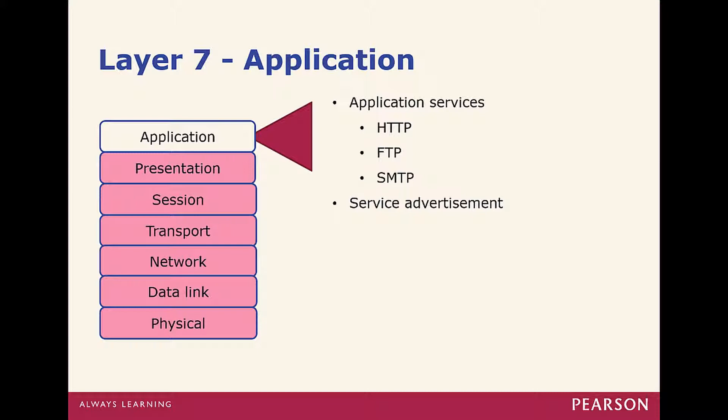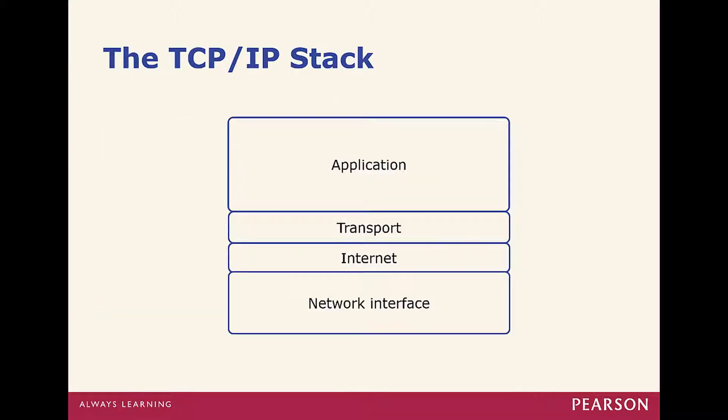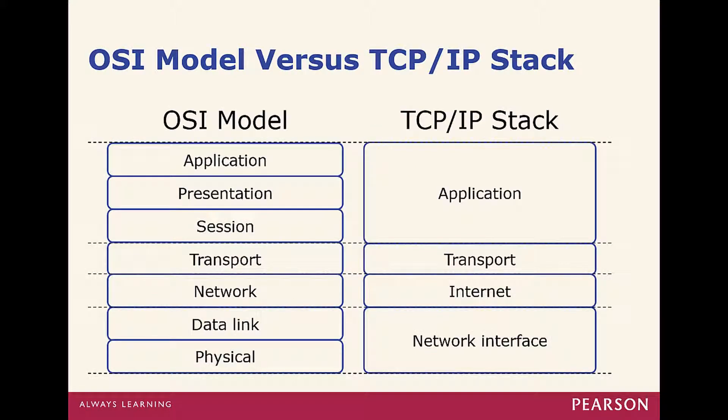Moving on to the TCP/IP stack. Notice it has just four layers: Application, Transport, Internet, and Network Interface. Compared to OSI, the top three OSI layers map to Application, Transport maps to Transport, Network maps to Internet, and the TCP/IP Network Interface layer combines both Data Link and Physical.